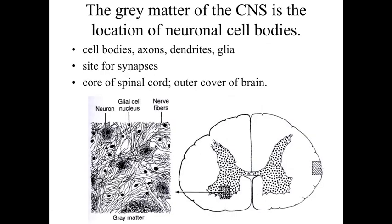If we take a look at how the central nervous system is organized, it's going to be comprised of either gray matter or white matter. Gray matter of the CNS is going to be the location of the neuronal cell bodies — the soma, the pericaryon. We're going to have some axons, a fair number of dendrites, as well as many of the glial cells. The gray matter is going to be the location for synapses, with lots of dendritic branches extending out, receiving signals and carrying that information to the cell bodies. The cell body will make a decision about whether or not to send that information on through an axon. Essentially, the receiving and processing of signals is going to be occurring within the gray matter of the central nervous system.